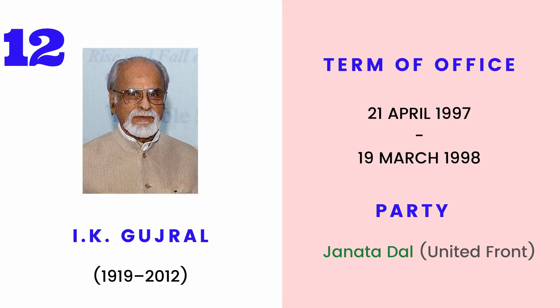IK Gujral served as the 12th Prime Minister of India from 1997 to 1998. Gujral was the third PM to be from the Rajya Sabha, the first being Indira Gandhi (1966 to 1977), the second HD Deve Gowda (1996 to 1997), and followed by Manmohan Singh (2004 to 2014).